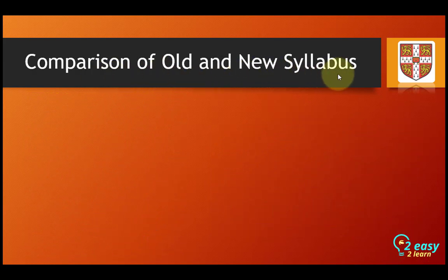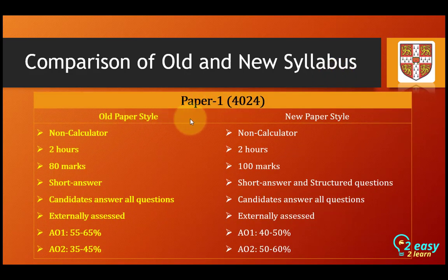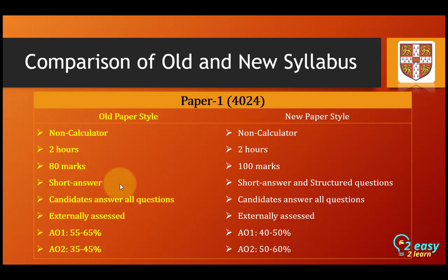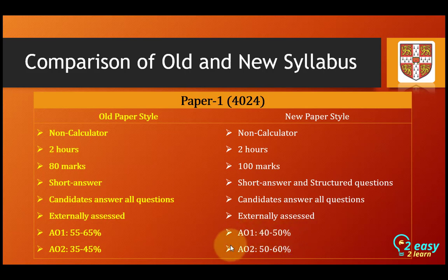Comparison of old and new papers — Paper 1. Old paper style versus new paper style: both are non-calculator. The old paper was 2 hours and the new paper is also 2 hours, but the old paper was 80 marks while the new paper is 100 marks. The old paper had only short questions, but the new paper has both short questions and structured questions. In both styles, candidates answer all questions. In the old paper, AO1 was 55 to 65% and AO2 was 35 to 45%, but in the new paper, AO1 is 40 to 50% and AO2 is 50 to 60%.